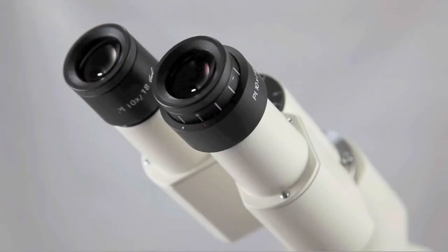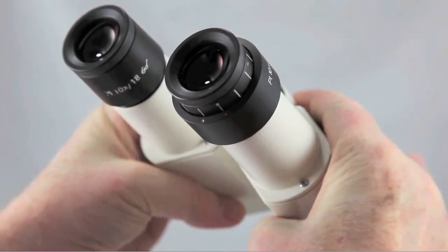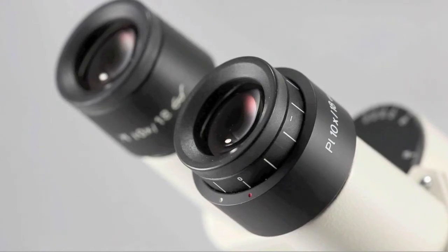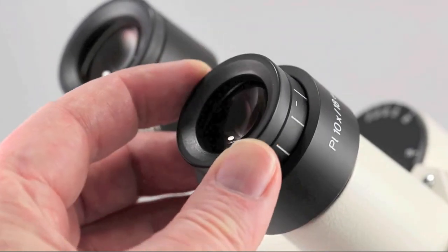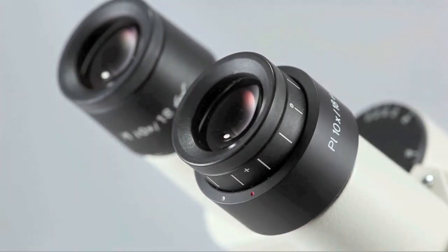If you haven't already done so, adjust the width of the oculars to fit your eyes. Establish your focus with the left eye, then adjust focus for your right eye using the diopter ring on the right ocular.